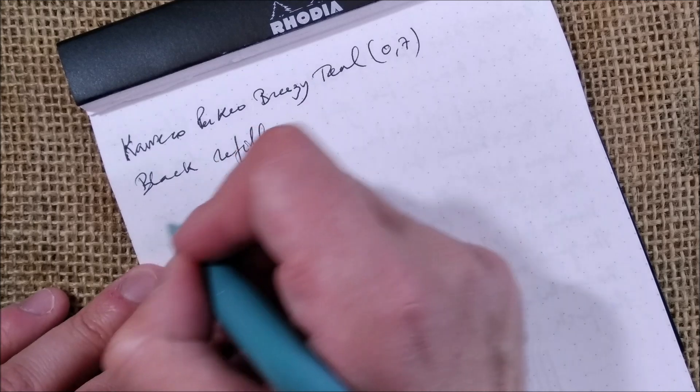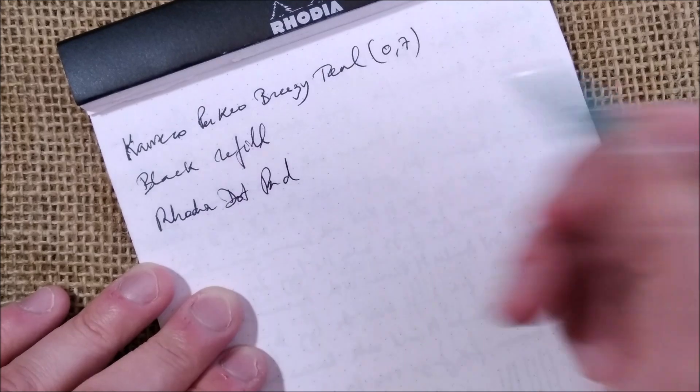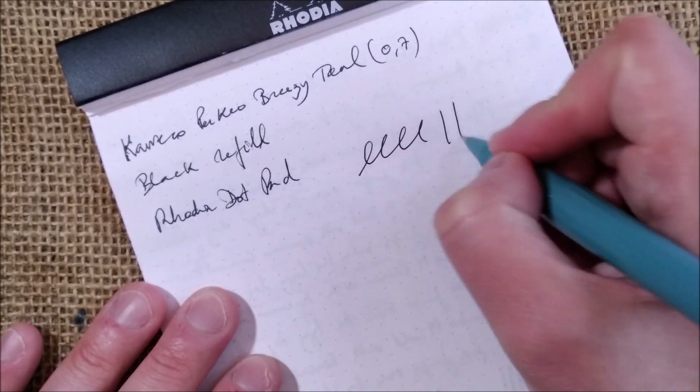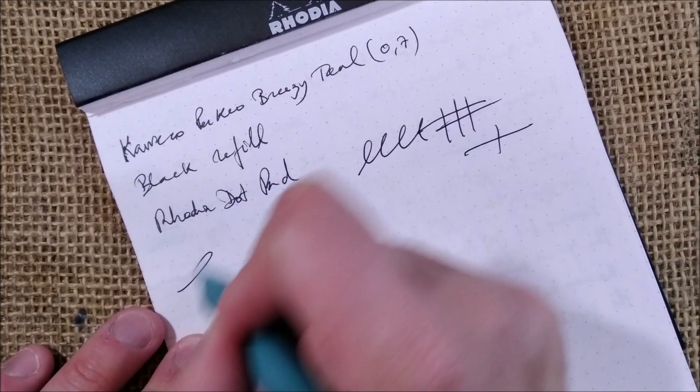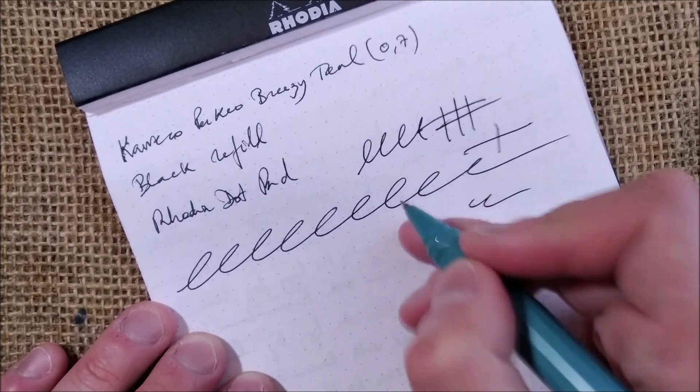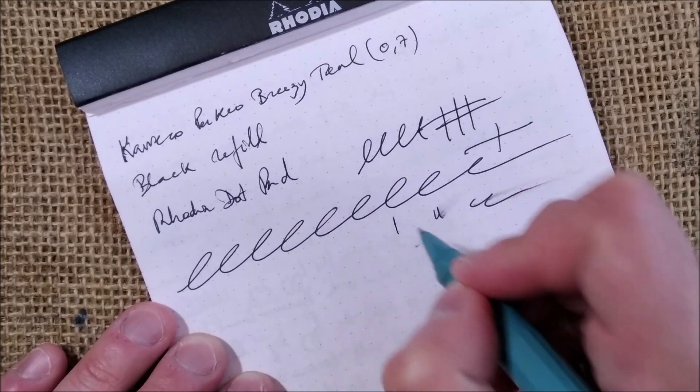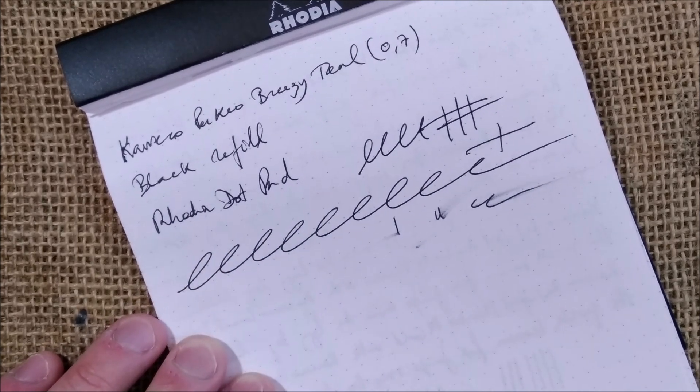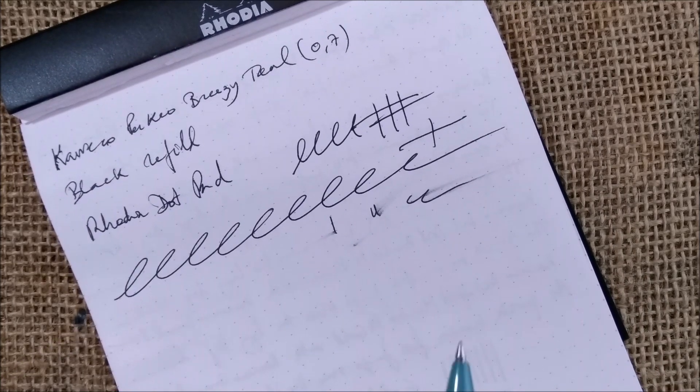And it is a black refill. And the paper is the usual Rhodia dot pad. Of course, you will not have any line variation. This is a rollerball. The line is very consistent. It doesn't skip. It doesn't fail. Let me just see if it smears. Yes, it may smear if it's not dry enough. But after dried, it doesn't smear anymore. Let me just write here a little bit.